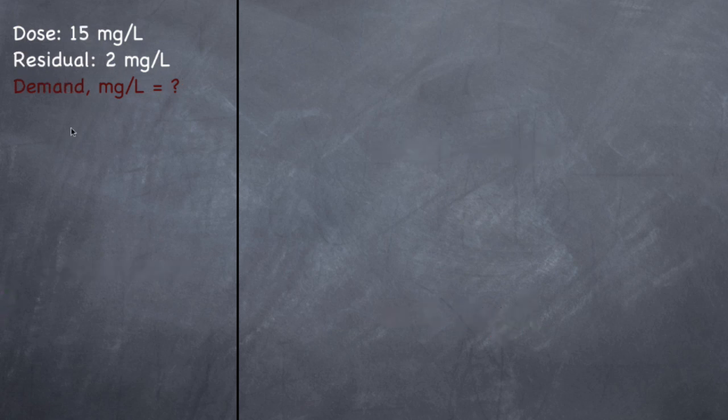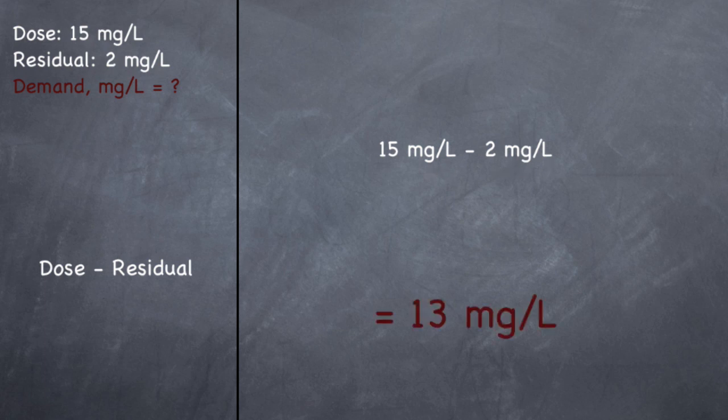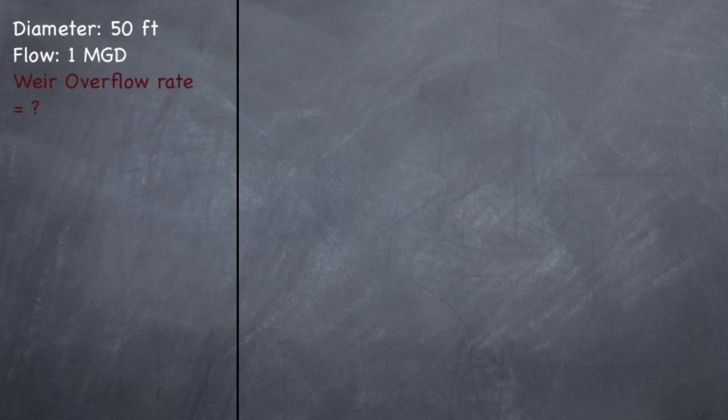All right, now demand, what's going to be consumed by the water. So if we dosed it at 15 and there's 2 left over, how much was consumed? So dose minus residual will give you demand. So we fed 15, there's 2 left over. That means 13 milligrams per liter was consumed. That was the demand of this wastewater. Again, very simple formulas. These are the ones that you should be able to do with your eyes closed because of how easy they are. You just need to memorize the formulas. All right.